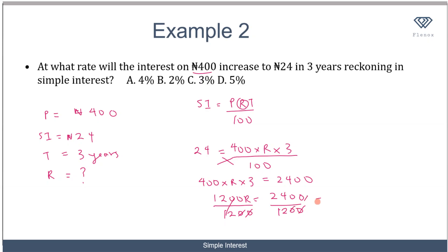The interest rate must be set at 2% for me to get an interest of 24 on the principal of 400 in 3 years. So the correct answer to this question is B. That pretty much sums up all you need to know with regards to simple interest.